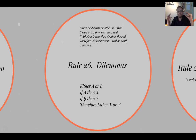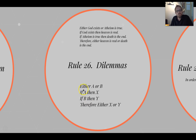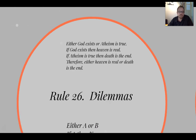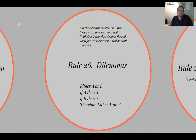You combine two conditional statements along with a disjunctive statement, and the conclusion is also a disjunction. Here's the example using atheism: Either God exists or atheism is true. If God exists, then heaven is real. And if atheism is true, then death is the end. Therefore, either heaven is real or death is the end — and you can see that makes perfect logical sense. Whether or not these statements are true depends upon the world, so again we're looking at these argumentative forms because of their deductive necessity and their formal logicality rather than whether one argument is true or not.